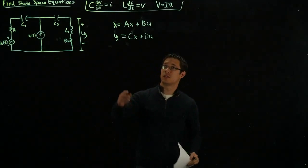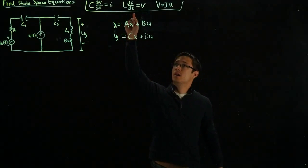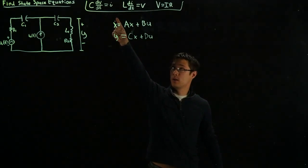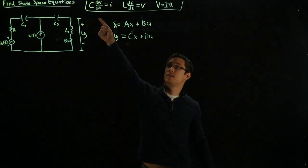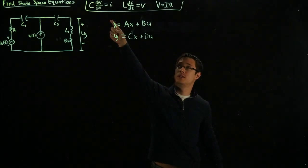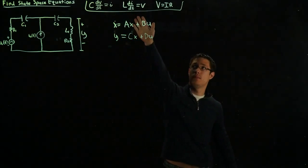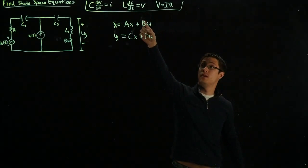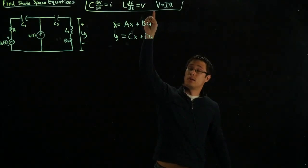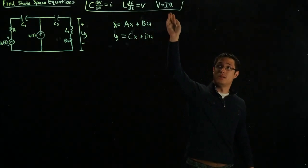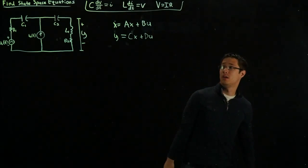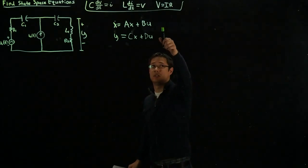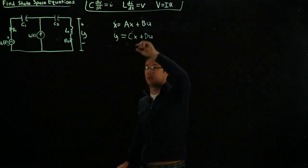The equations for these devices, as we recall from our basic circuits classes, is the current through the capacitor is the capacitance times the derivative of the voltage of the capacitor with respect to time. For the inductor, it's simply the inductance times the derivative of the current of the inductor with respect to time equals voltage. And for our resistors, for convenience, I simply wrote Ohm's law, V equals IR.